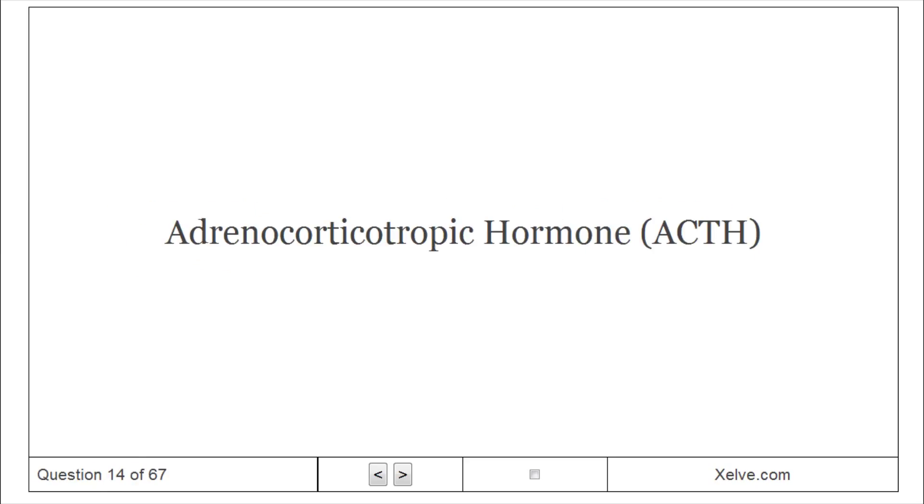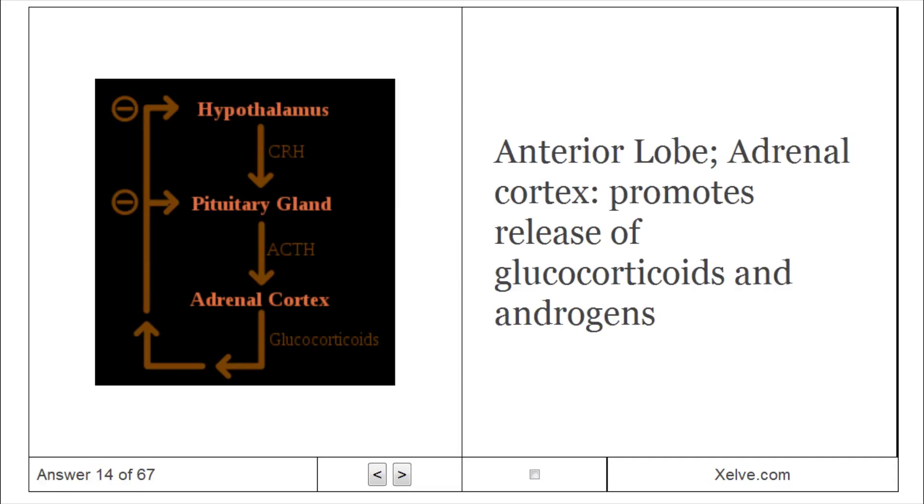Adrenocorticotropic hormone, ACTH. Anterior lobe targets adrenal cortex. Promotes release of glucocorticoids and androgens.